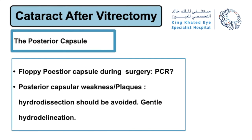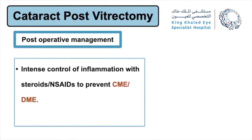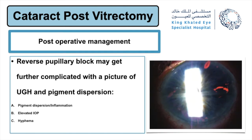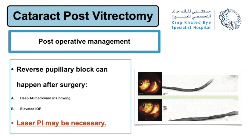These eyes can present with a small pupil or weakened zonules, so iris hooks, capsular hooks, and CTRs can be helpful. The posterior capsule tends to be floppy, and the risk of posterior capsule rupture is higher with nucleus drop. Hydrodissection is better to be avoided in the presence of posterior capsular weakness. Postoperatively, intense control of inflammation with steroids and non-steroidals to prevent cystoid macular edema and diabetic macular edema is recommended. Reverse pupillary block can present postoperatively with elevated IOP, pigment dispersion, hyphema, iris transillumination defects, and chronically elevated IOP similar to UGH syndrome, which can be dealt with by laser peripheral iridotomy.